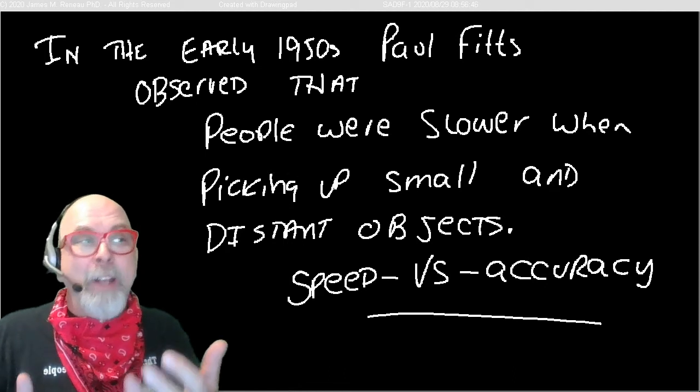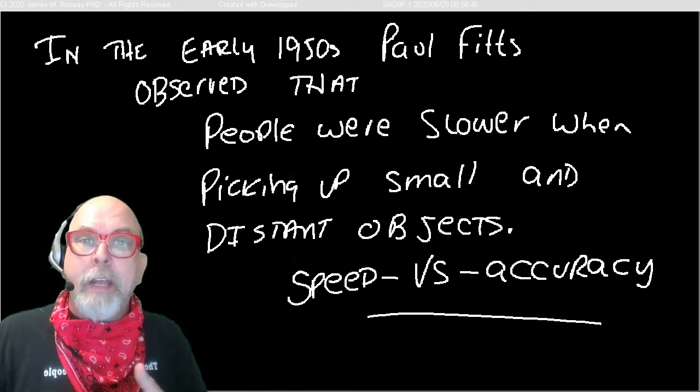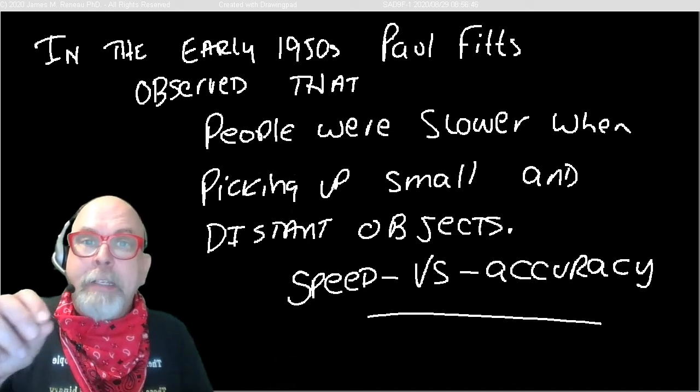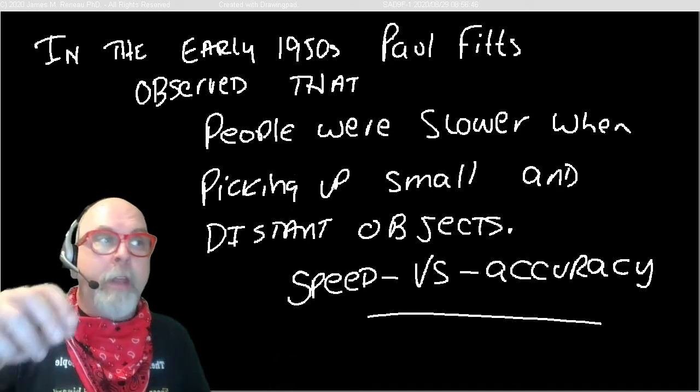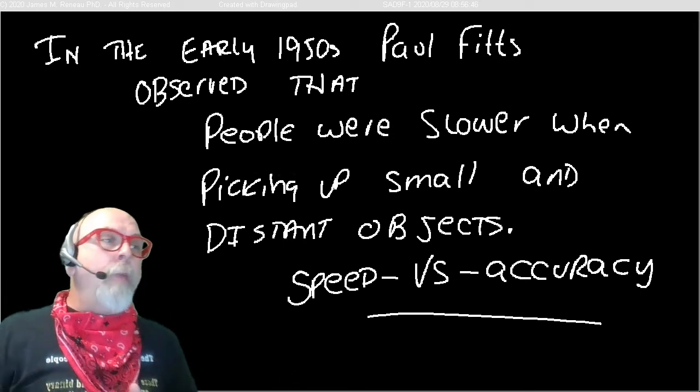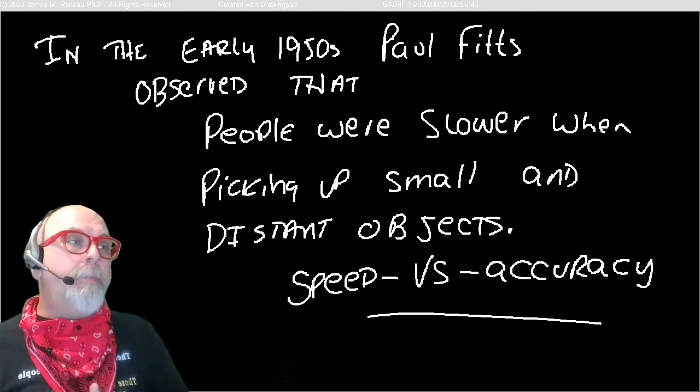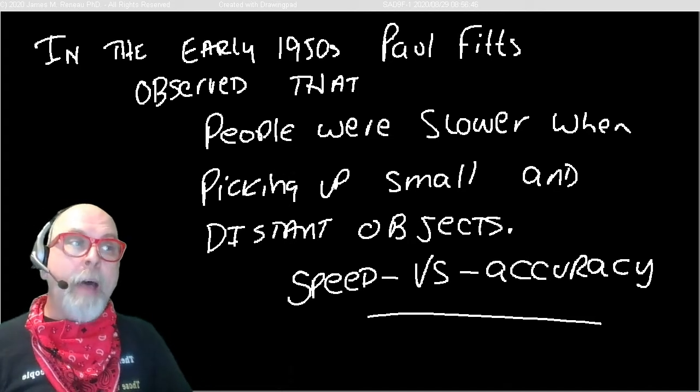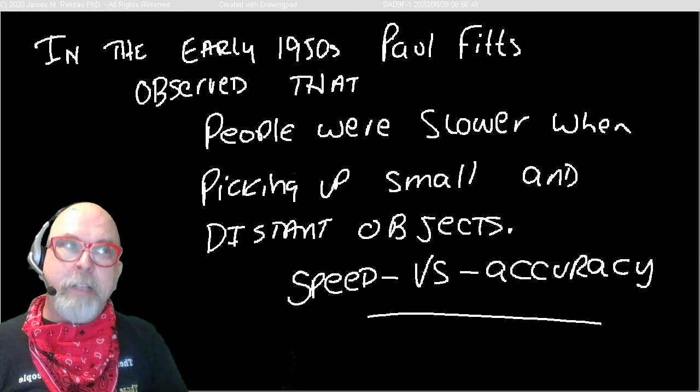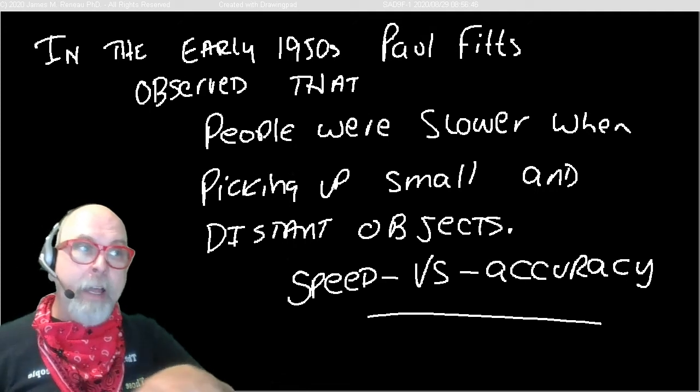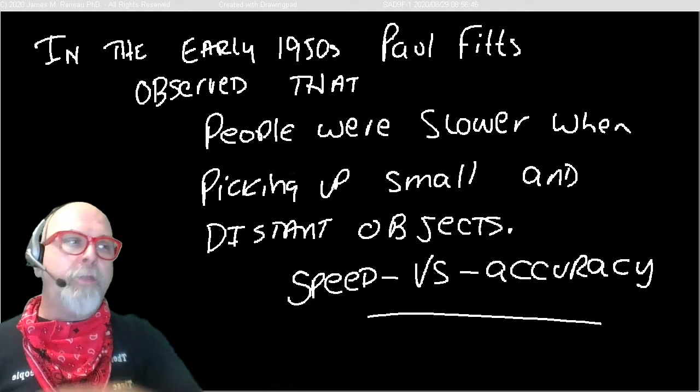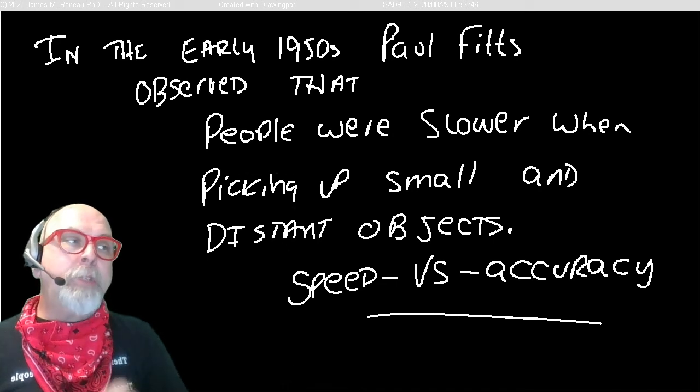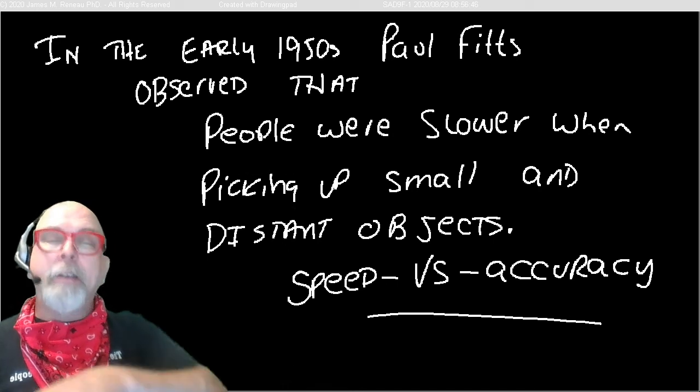He figured out, well, we all kind of know this, but he was the one that created a set of formulas to describe how long it takes for a user, a human, to pick something up. And what he figured out was that people were slower, it was slower, to pick something up that's further away. Well, that kind of makes sense, because you've got to move your arms, you've got to kind of find the target as it's further away. And he also found that picking up small things takes longer.